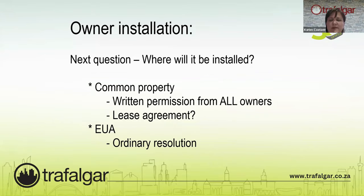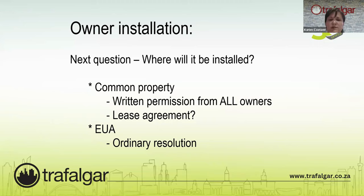Because it is very difficult to get written permission from all owners, especially in a larger scheme, the way around it is to make that roof space where the solar installation will be done an exclusive use area. There are different ways of making it an exclusive use area, which we won't go into detail here, but once it has been made an exclusive use area, that owner will only need an ordinary resolution — a majority of owners needs to approve that installation.